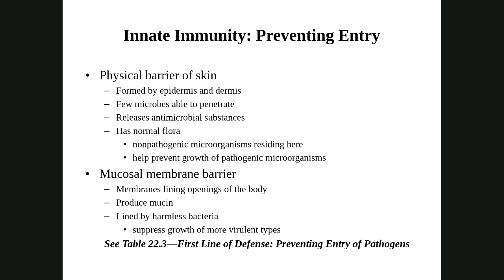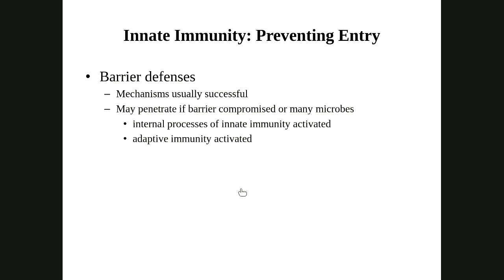To prevent entry, skin is a major player — the physical barrier helps block most things. We also have our own bacteria on our skin that helps fight pathogens. Besides skin, mucus membranes produce thick secretions that can prevent entry of foreign particles. Accessories like hair in the ear, nose, and around the eyes also help prevent entry. This first line of defense is usually very successful — we don't get sick every day. But if something gets past it, we trigger our internal innate immunity processes, while simultaneously beginning our adaptive defenses.